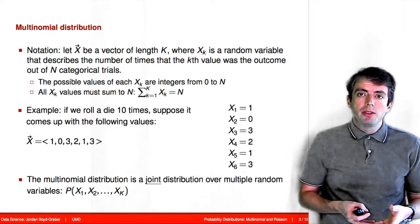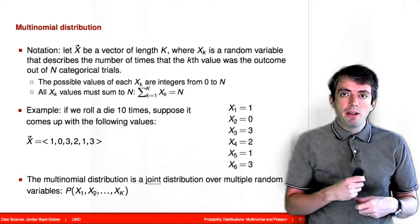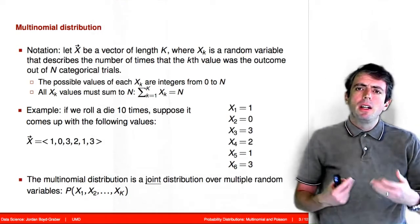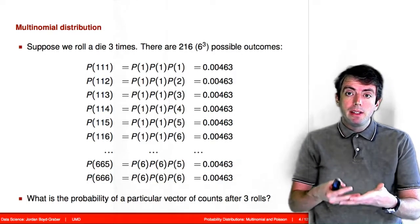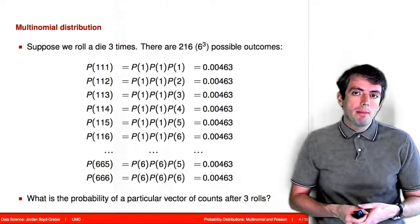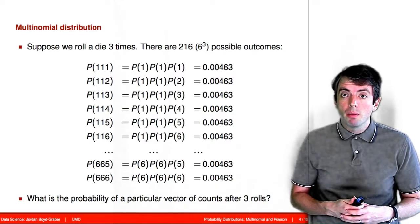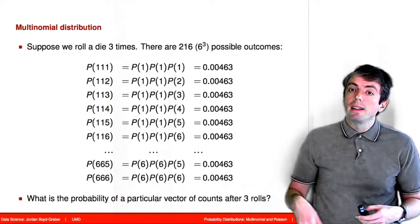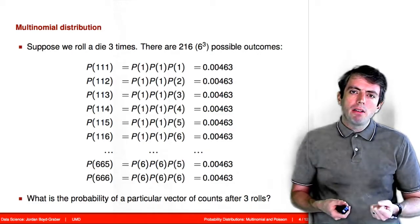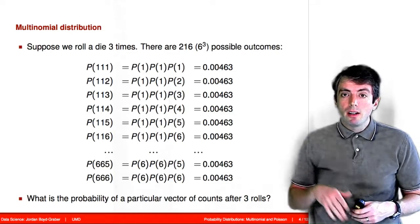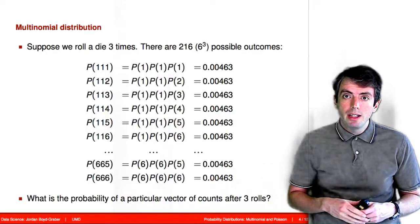Another way of thinking about this is that the multinomial distribution is a joint distribution over each of the k different random variables — the number of times you see each outcome from a categorical distribution. We want a probability function describing this. Think about rolling a die three times: there are 6³ = 216 possible outcomes. For a fair die, all are equally probable, so any specific sequence has probability 1/216. But just like with the binomial distribution, some outcomes — when counting up rolls — are more likely than others, because we need to account for the number of ways the various count vectors could appear.